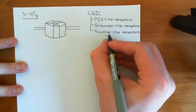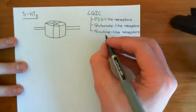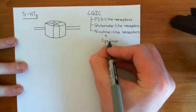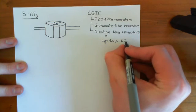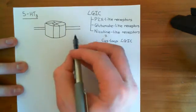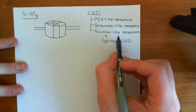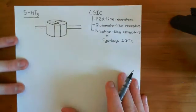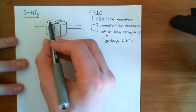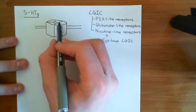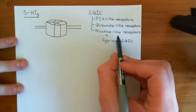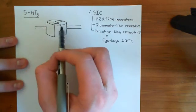The old name for this massive superfamily of ligand-gated ion channels was the cys-loop ligand-gated ion channels. The first part of this discussion applies for all cys-loop ligand-gated ion channels. These 5-HT3 receptors are pentamers — they are made up of five separate proteins which have all joined together. That is true for all nicotine-like receptors: they are pentameric.